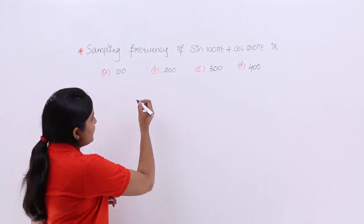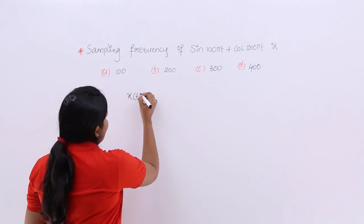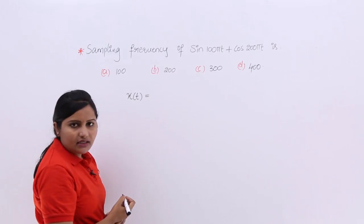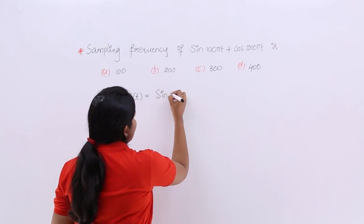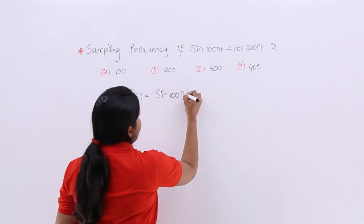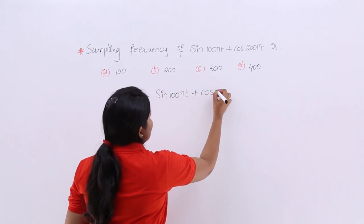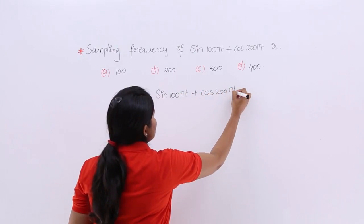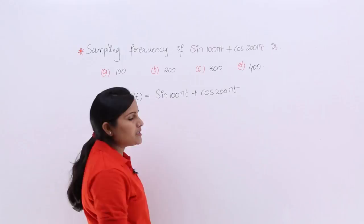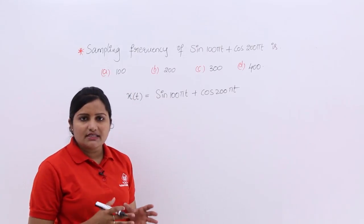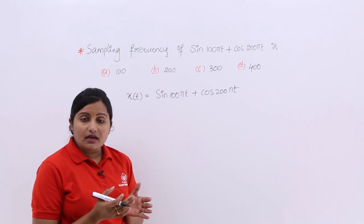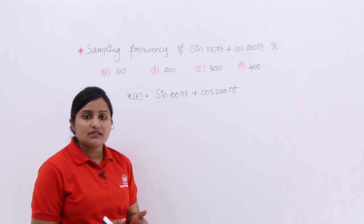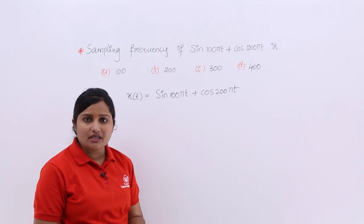First of all, the given message signal I am considering as x(t), and I am writing x(t) as sin(100πt) + cos(200πt). This is my message signal. By observing the signal itself, we can say it is having more frequency components — that means it is having multiple frequency components.